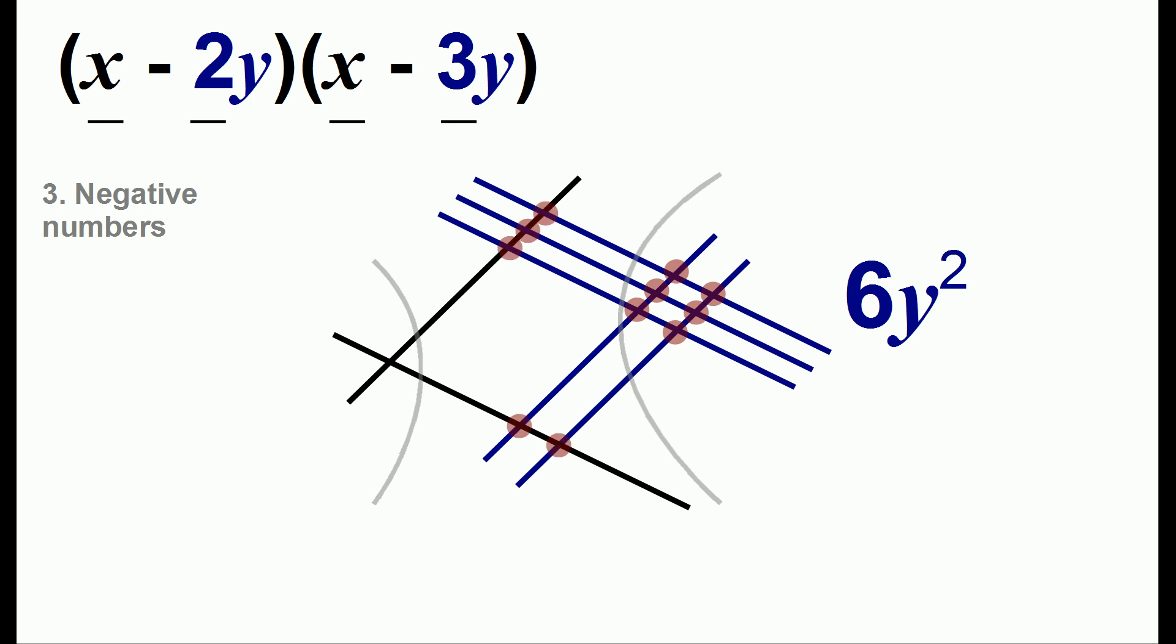In the center we have five dots and this is the intersection of a black line which is x and a blue line which is a negative y. So x times negative y is negative xy and therefore we have negative five xy.